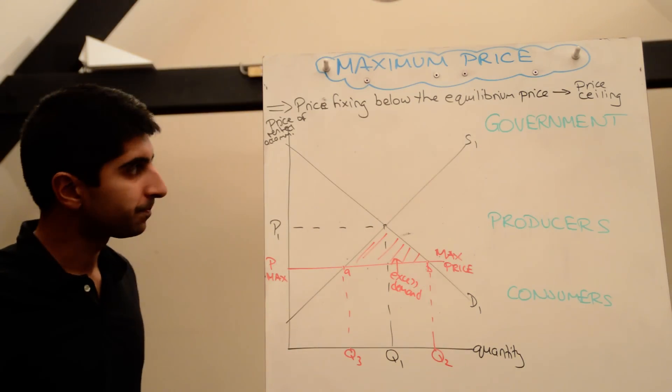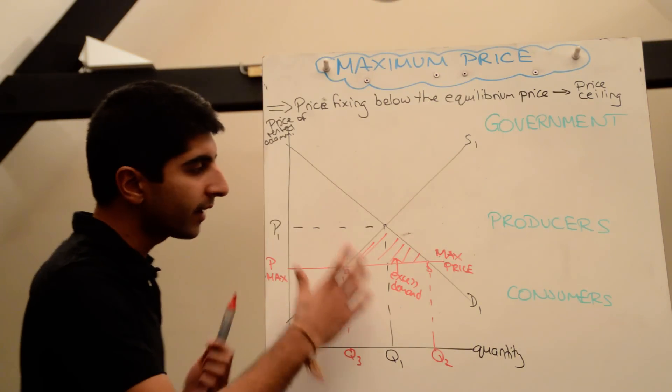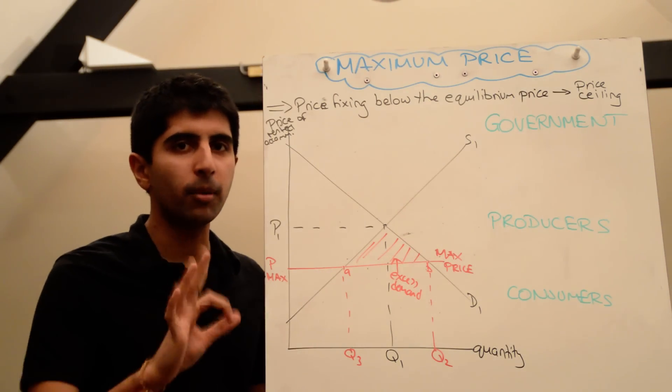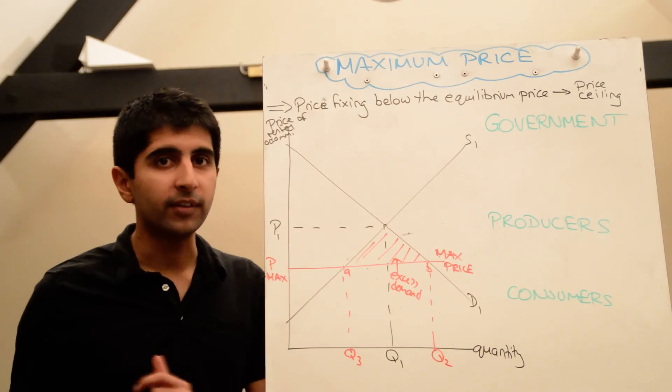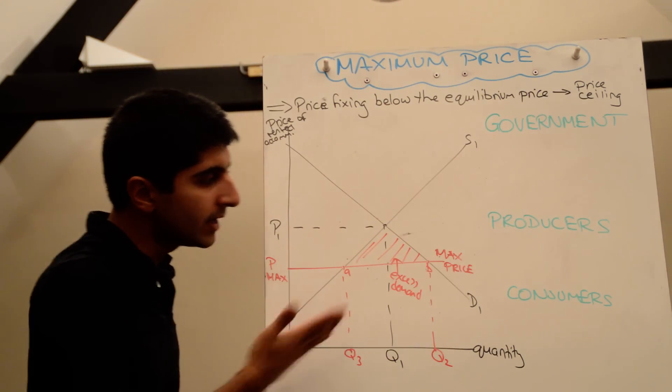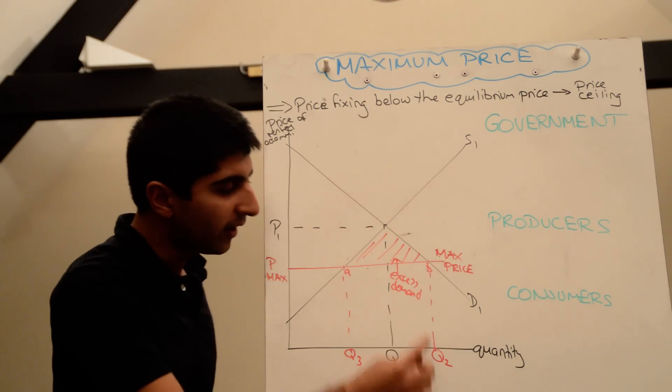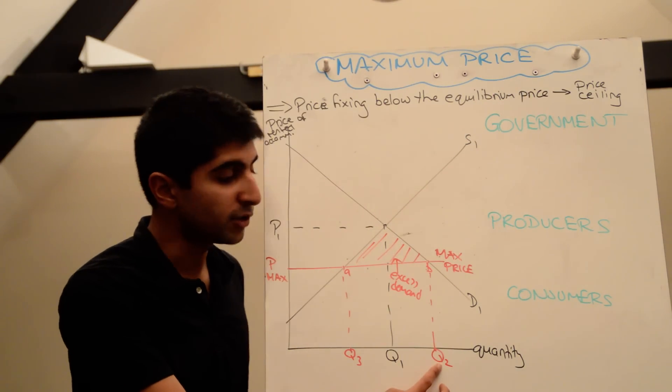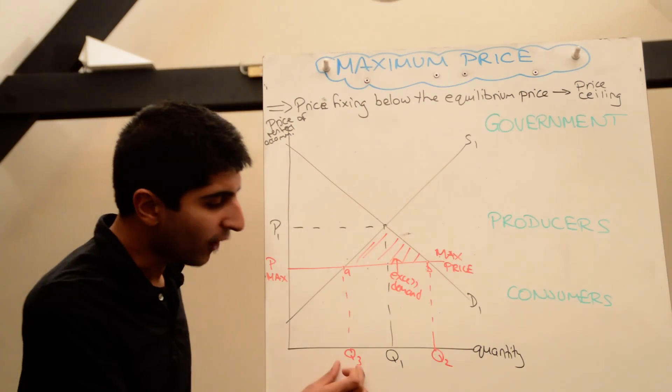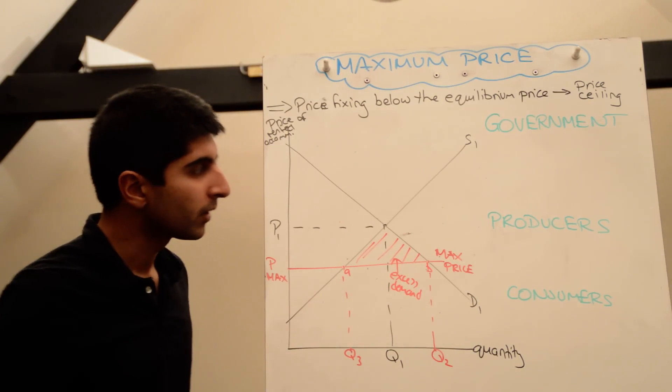Let's look at the impact on stakeholders now. So the government has got a problem here. The government has actually imposed a price control that's caused an excess demand problem. That needs to be dealt with. And the way they can deal with it is by trying to increase supply to cut demand at point B. If they can intervene and do that, then that will mean that Q2 units are actually produced and sold, and that will be an efficient outcome, instead of only Q3 units being produced and actually sold.